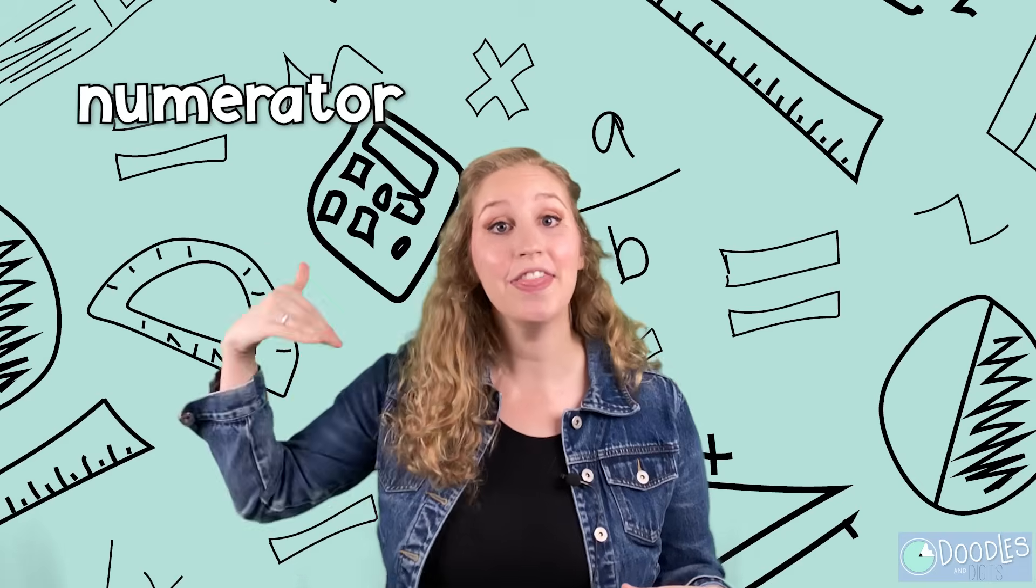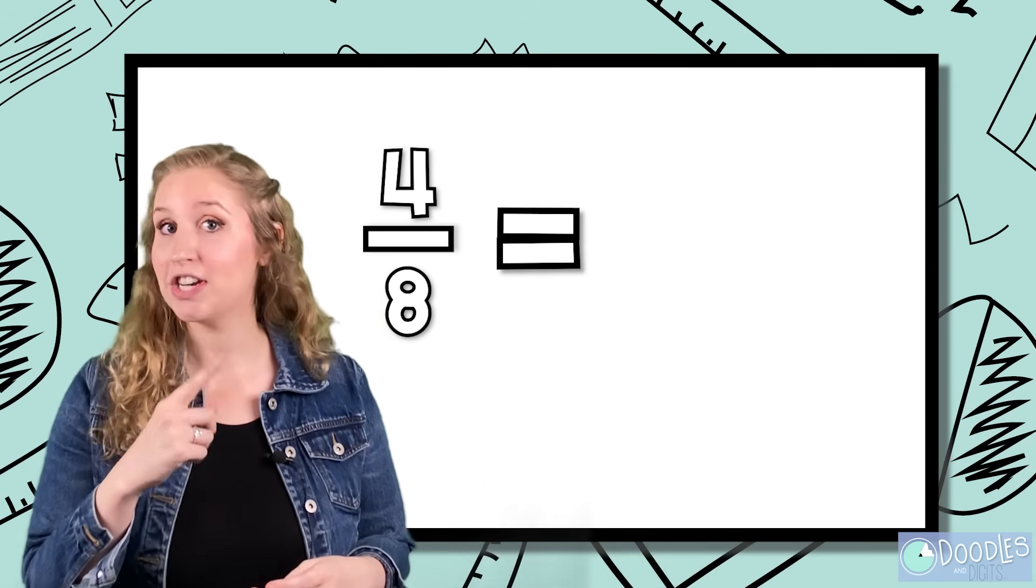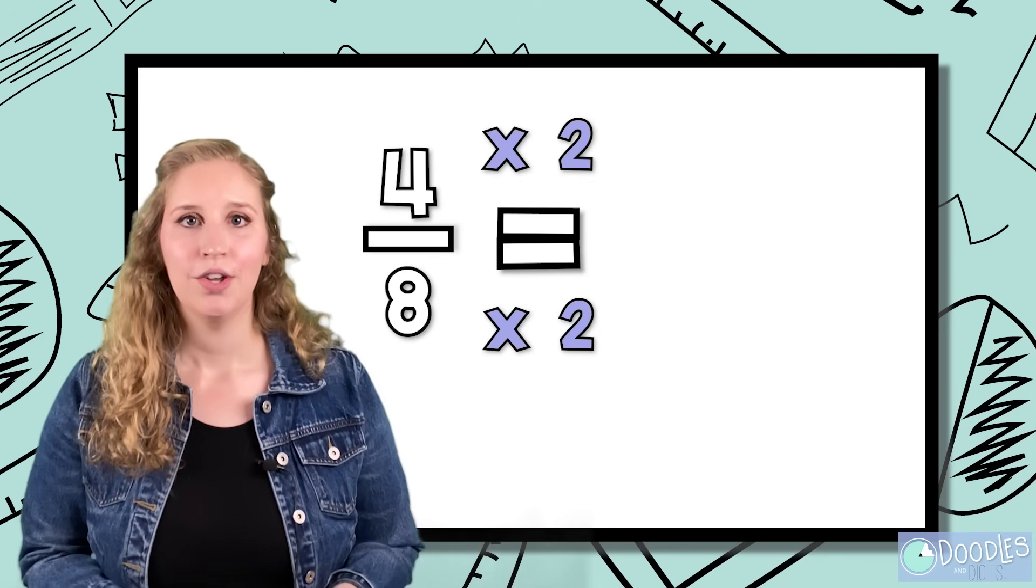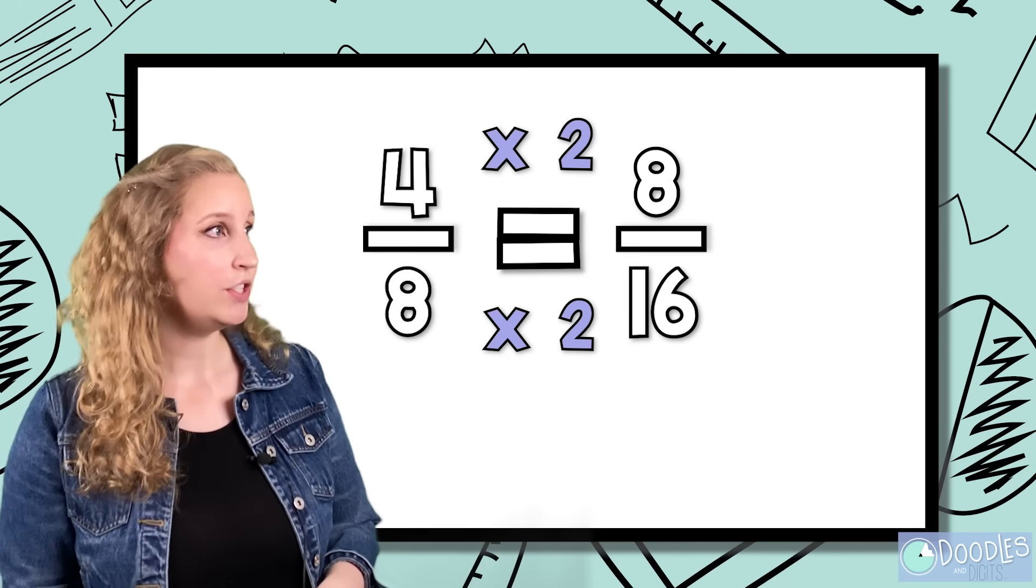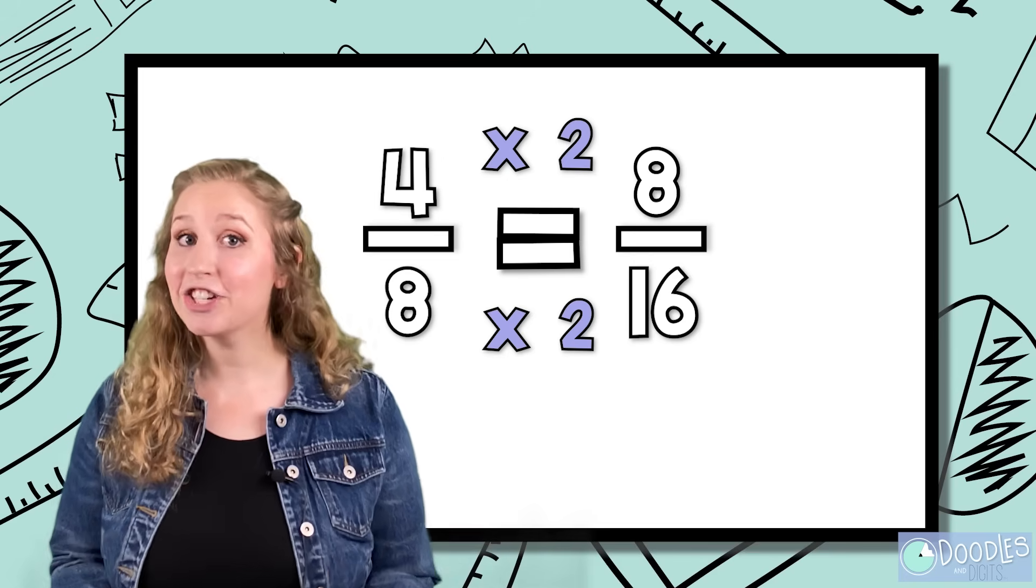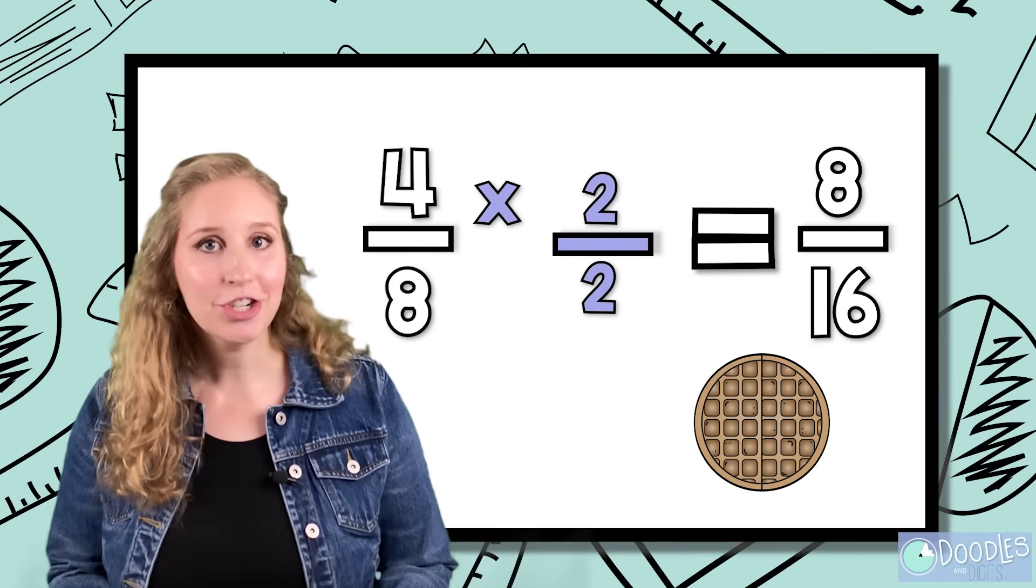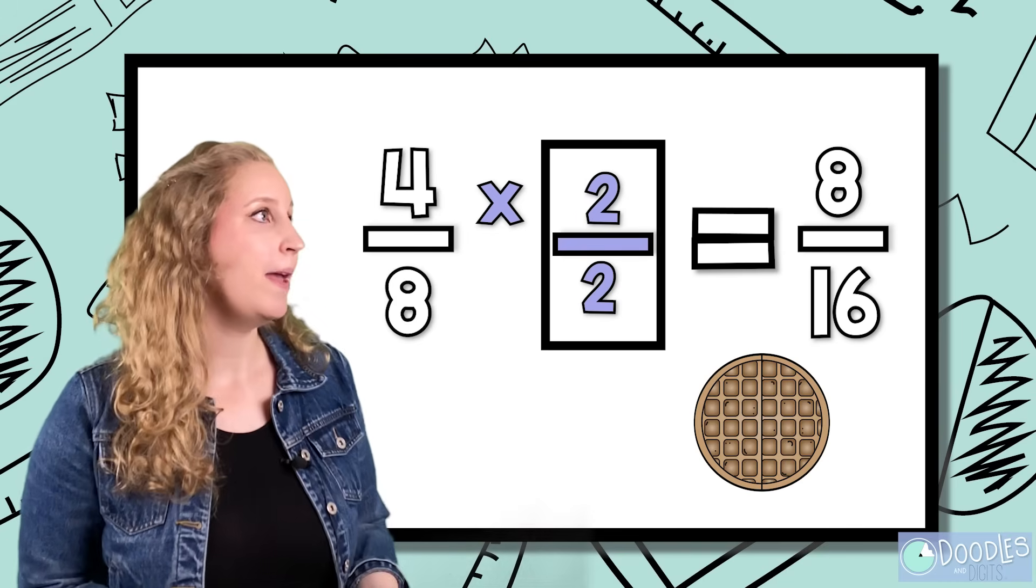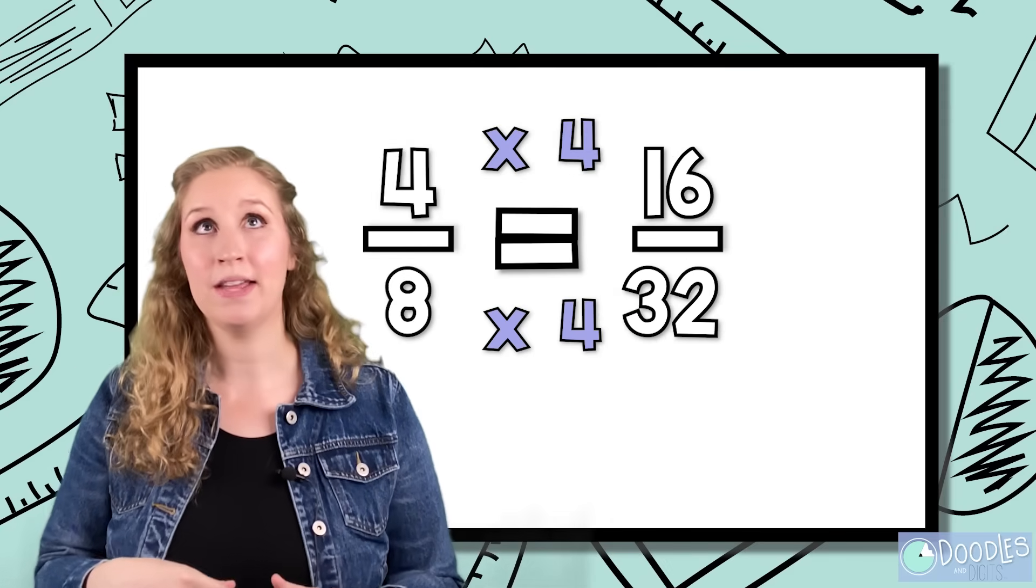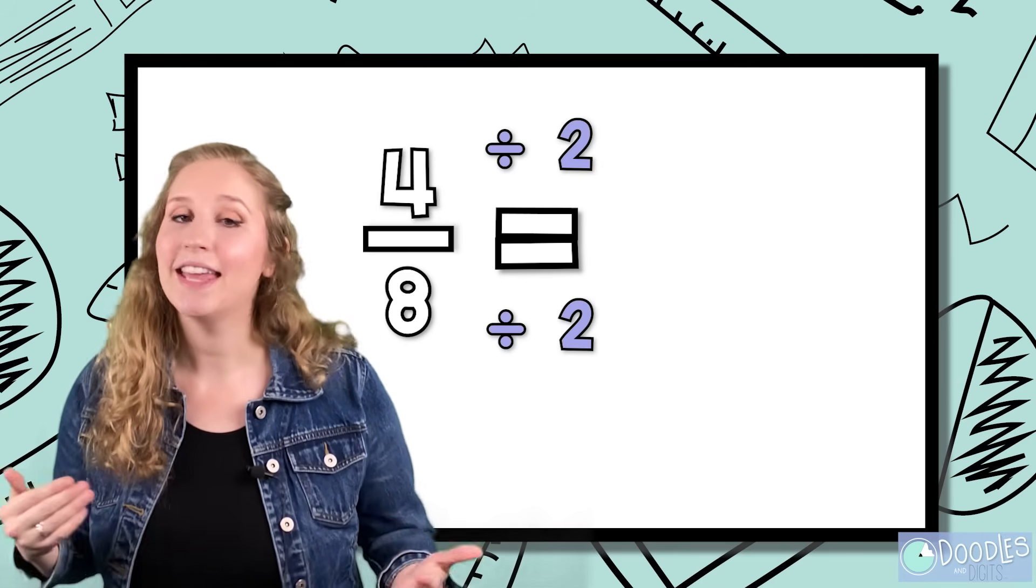You can also find equivalent fractions by multiplying or dividing the numerator and the denominator by the same number. Let's look at this problem right here. So when we look at this fraction, we're going to multiply the numerator and the denominator by the same number. So let's say two. We're going to multiply the numerator by two and the denominator by two. When you multiply the numerator and denominator by the same number, you are actually multiplying by one whole. Look, two over two is actually one. So you can multiply by three over three, four over four, you can multiply the top and bottom by six over six. You can also divide the numerator and denominator to get an equivalent fraction.